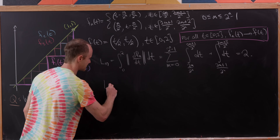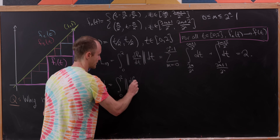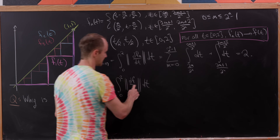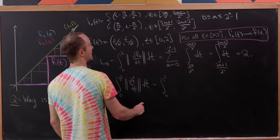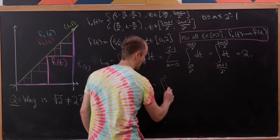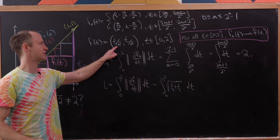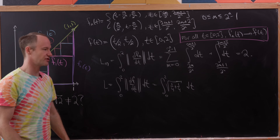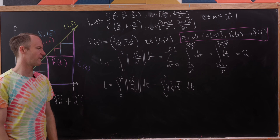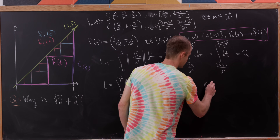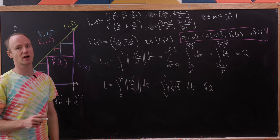Now let's compare that to the length of the limiting curve f(t). The arc length is the integral from 0 to 2 of |df/dt| dt. Taking the derivative of (t/2, t/2) gives (1/2, 1/2), so inside the integral we get √(1/4 + 1/4) = √(1/2) = 1/√2 — wait, a quick calculation gives √2/2 times 2, which is √2. So even using calculus, the two lengths seem to contradict each other.